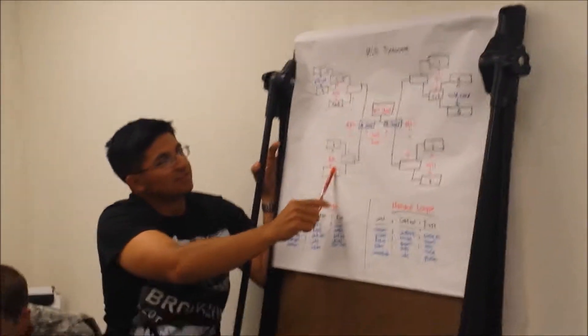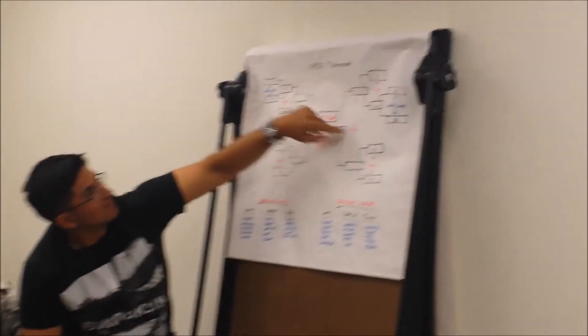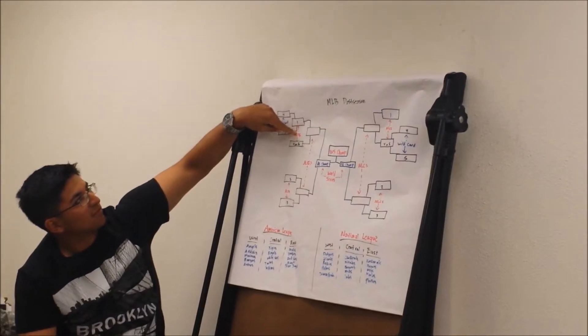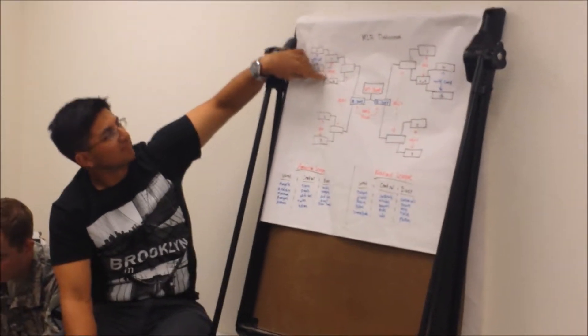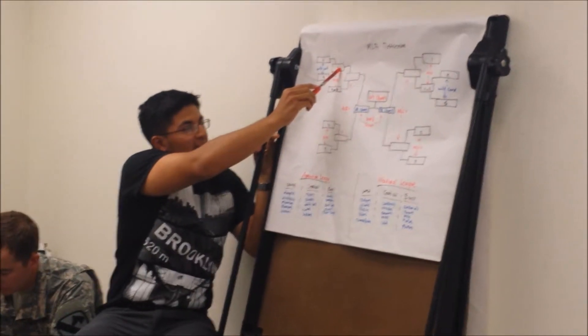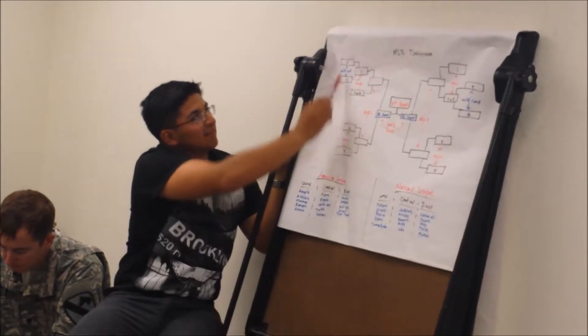After this Division Series, this Division Series is determined, as you can see it's on both sides still. The Division Series is determined by whoever wins the best 3 out of 5 games. Whoever wins the best 3 out of 5 games, you've got 8 teams left.